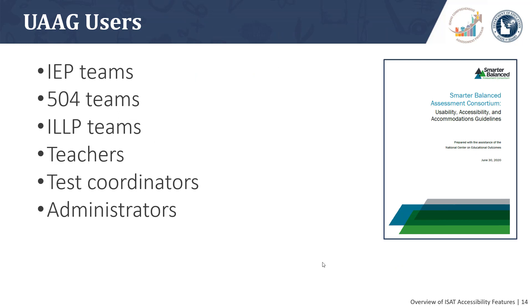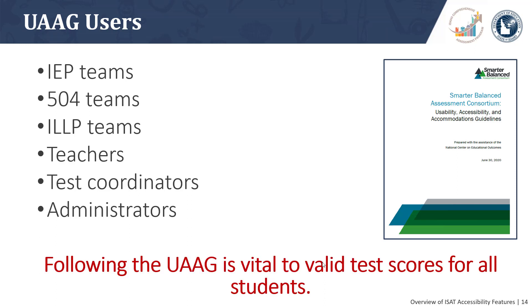The UWAG is intended for use by IEP team members, 504 teams, ILLP teams, General Education, Special Education, and English as a Second Language teachers, school or district test coordinators, and school or district administrators. Any and all of these professionals will use the UWAG when choosing and providing accessibility features to students taking the ISAT interim and summative assessments in ELA, Math, and Science. Only by following the accessibility features guidance outlined in the UWAG can professionals ensure that all students will receive valid test results.